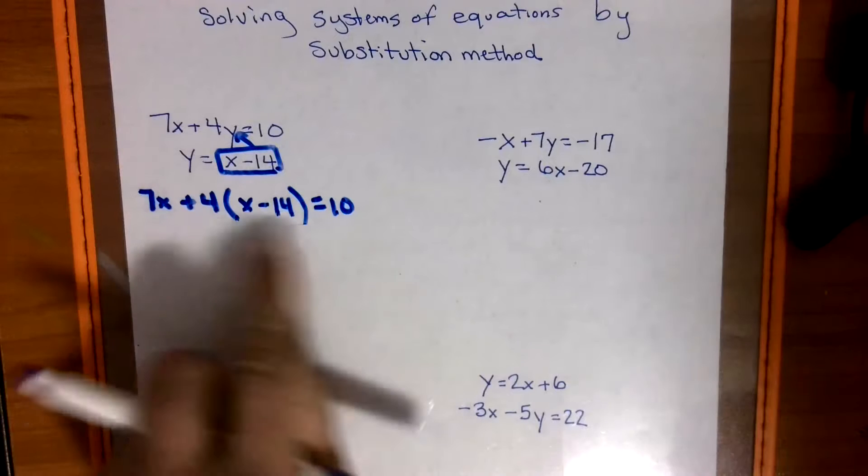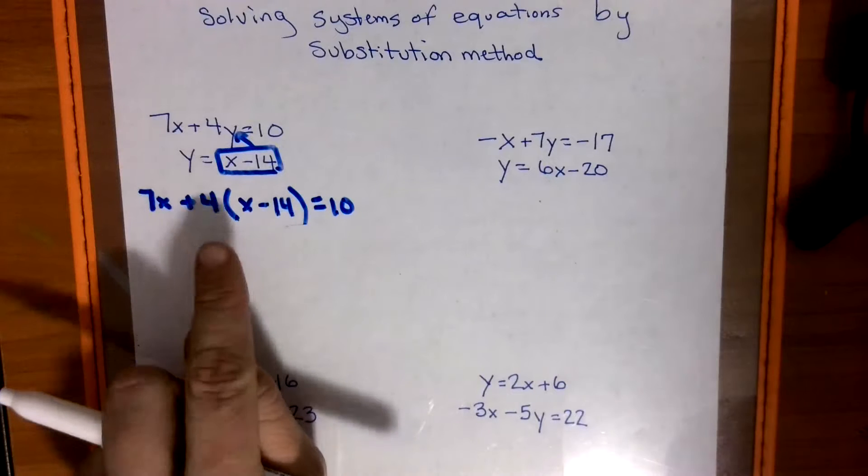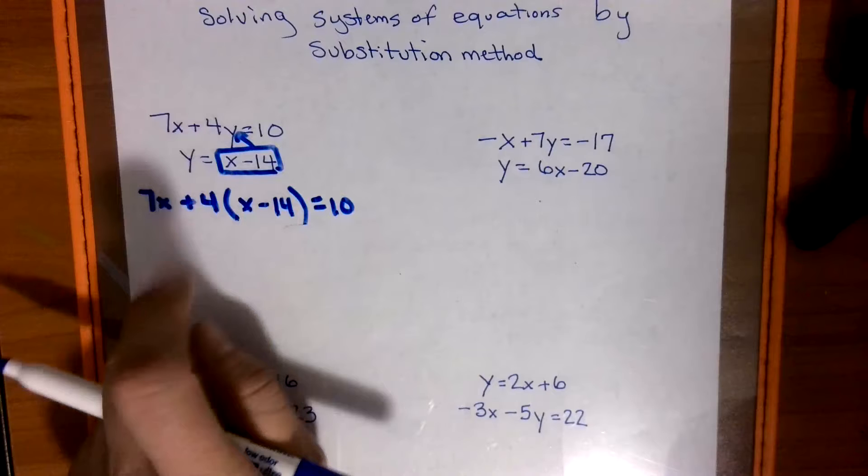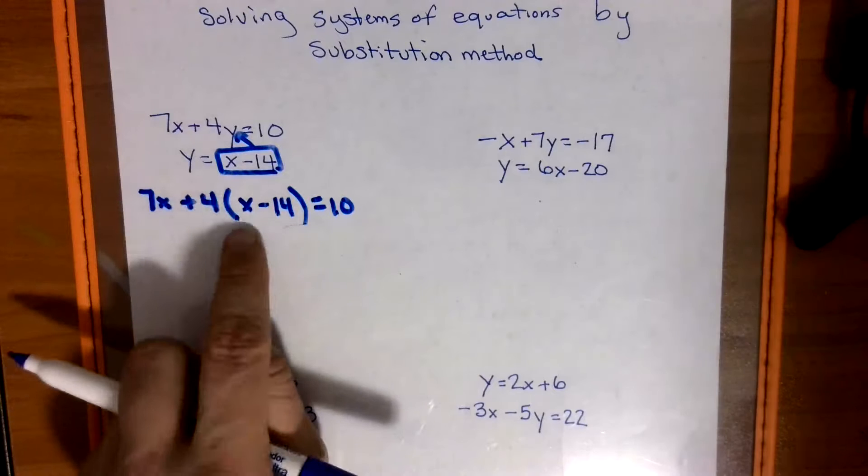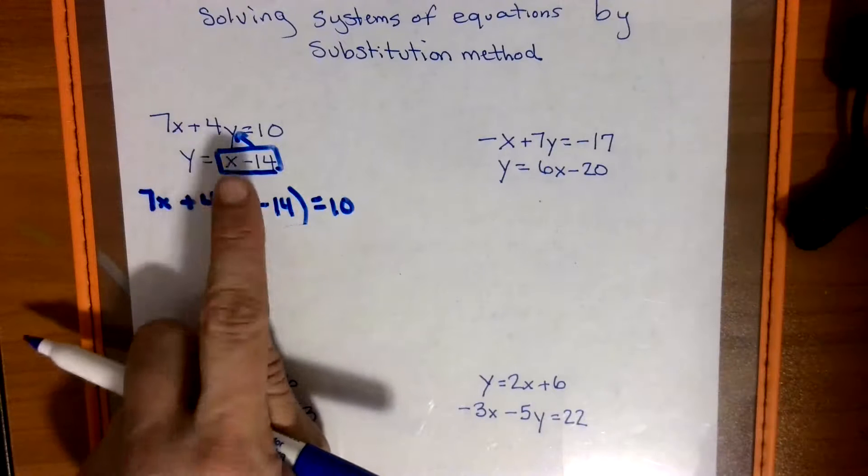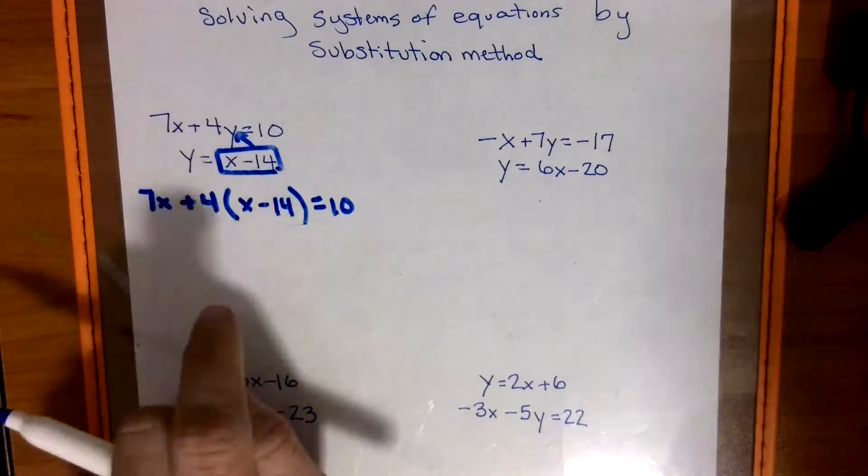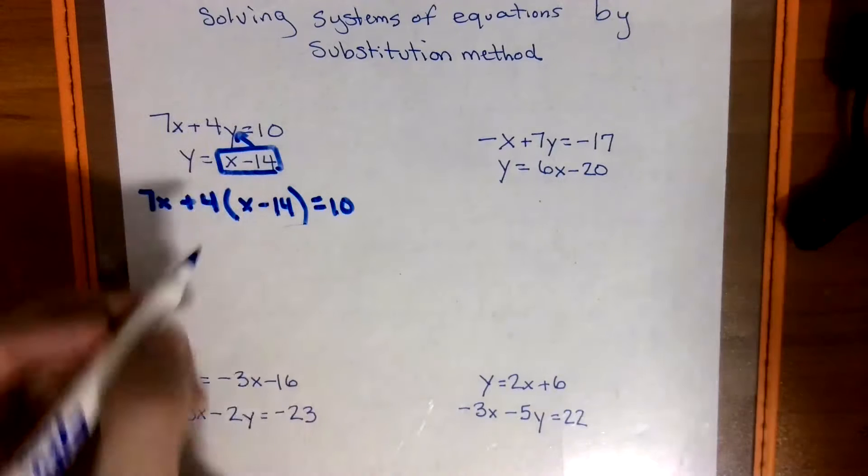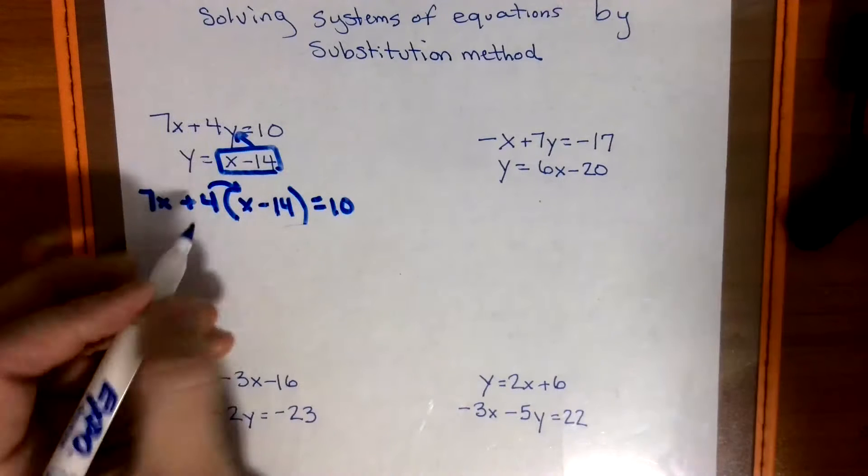And now you notice we only have one letter. We no longer have two letters we're dealing with. But after we solve for the x, we do have to insert it back in to solve for the y. So this is initially what we're doing first. So now we have to do the thing called distributive property.